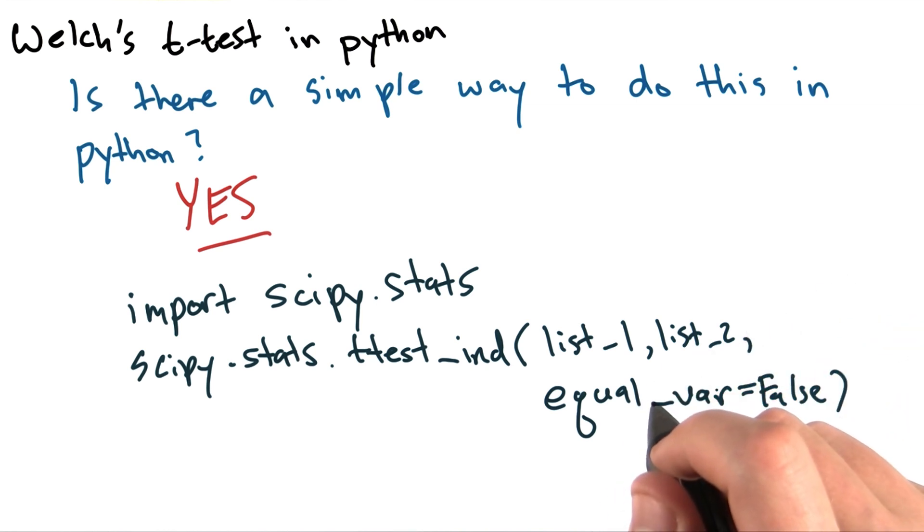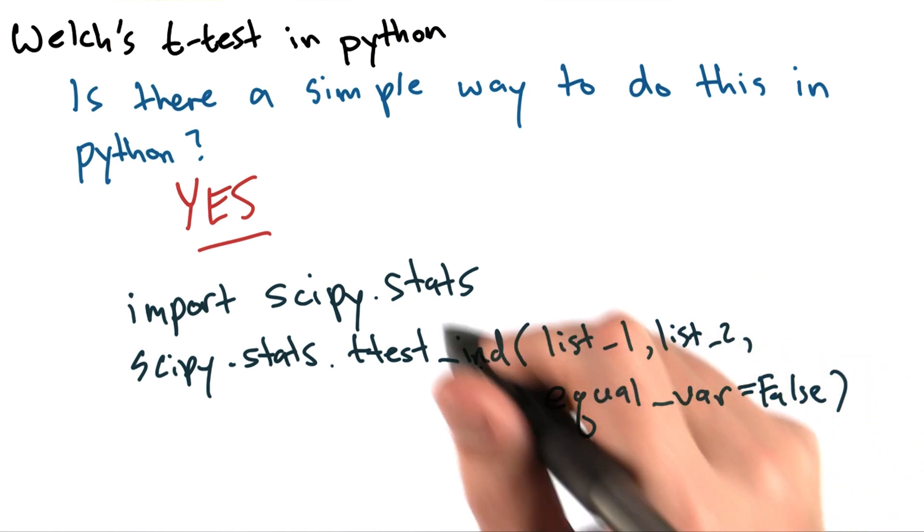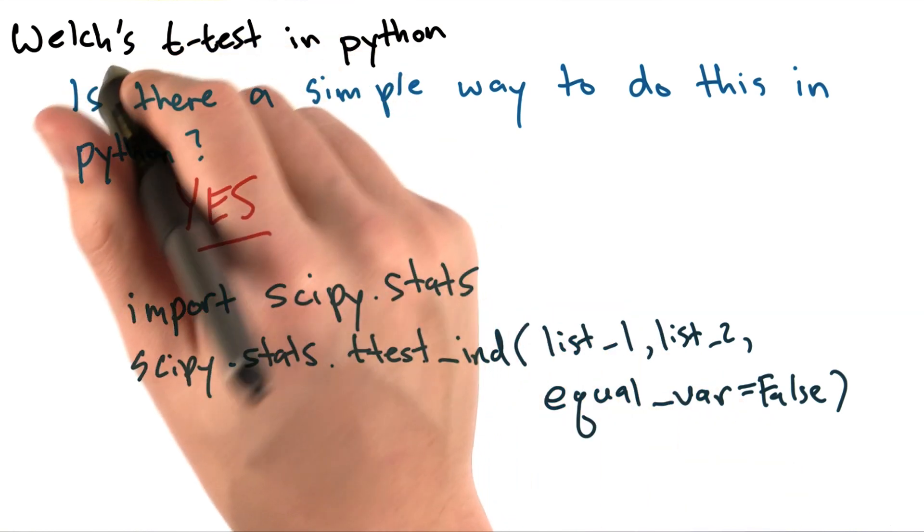This indicates whether or not we think the variance of our two samples is equal. This equal_var equals false argument makes this particular call of the t-test equal to Welch's t-test.